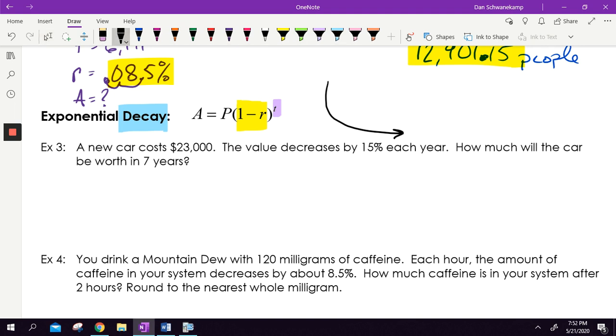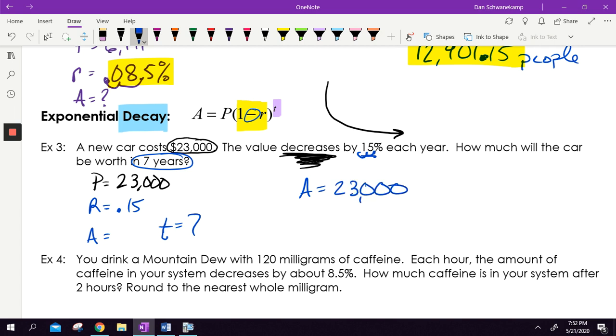Other than that, the problem is the same. A new car costs $23,000. So that's going to be my principle, $23,000. The value decreases. When you buy a car, it's going to become less and less money each year. It gets worn out. By 15%, that's a lot, each year. So my rate, move it two spots, 0.15. How much will the car be worth in seven years? So we're trying to find our ending amount when our T is seven. And so really, the only difference between this problem and the last problem is this thing. My amount is going down. It is not exponential growth anymore. It's exponential decay. And so instead of one plus something, it's going to be one minus 0.15.